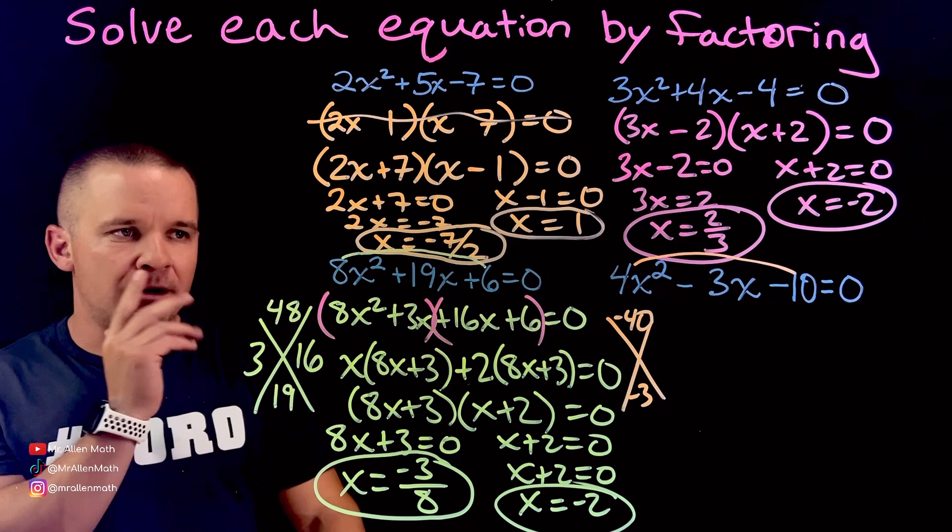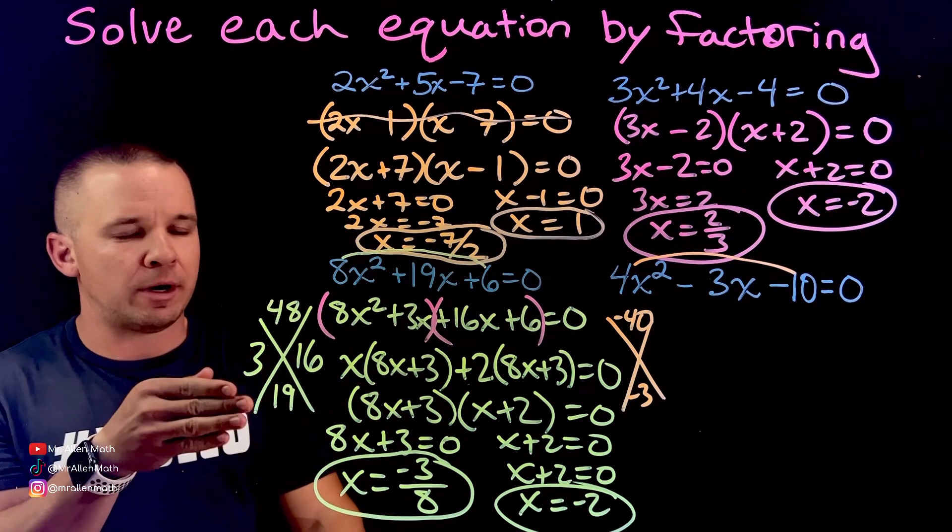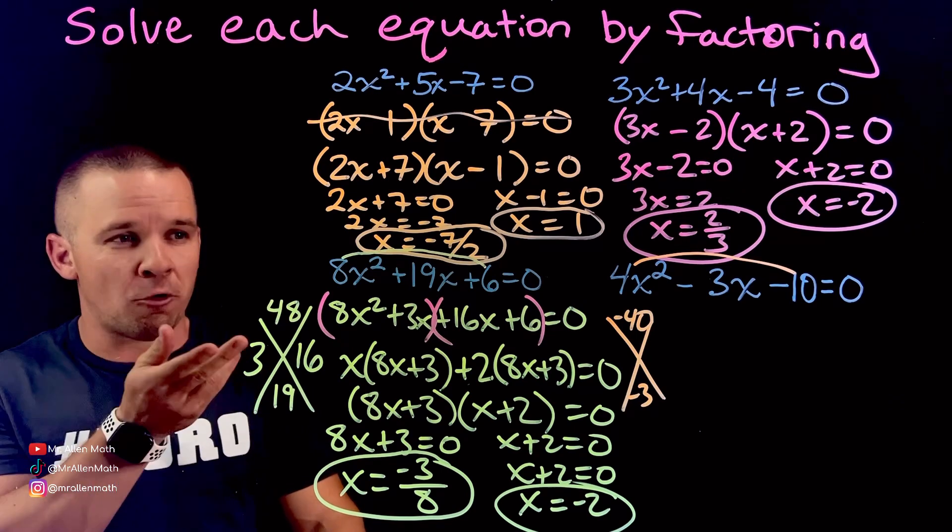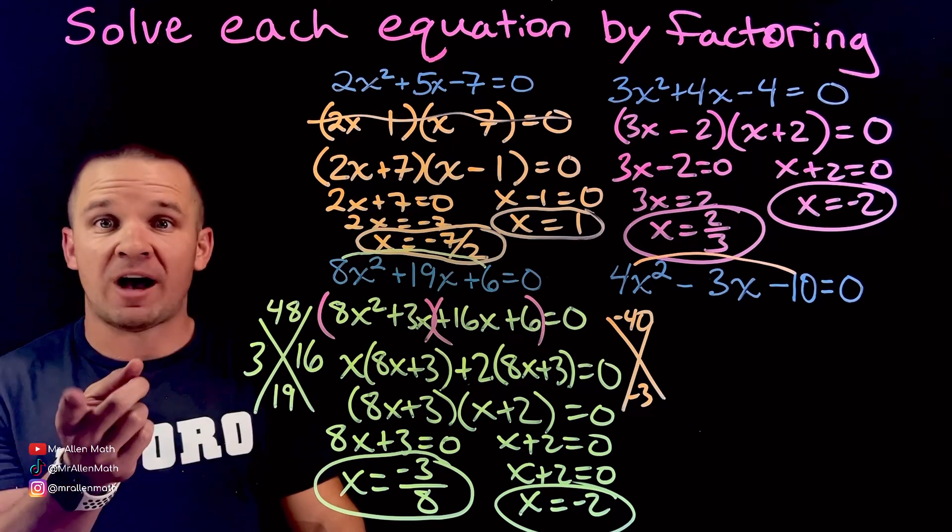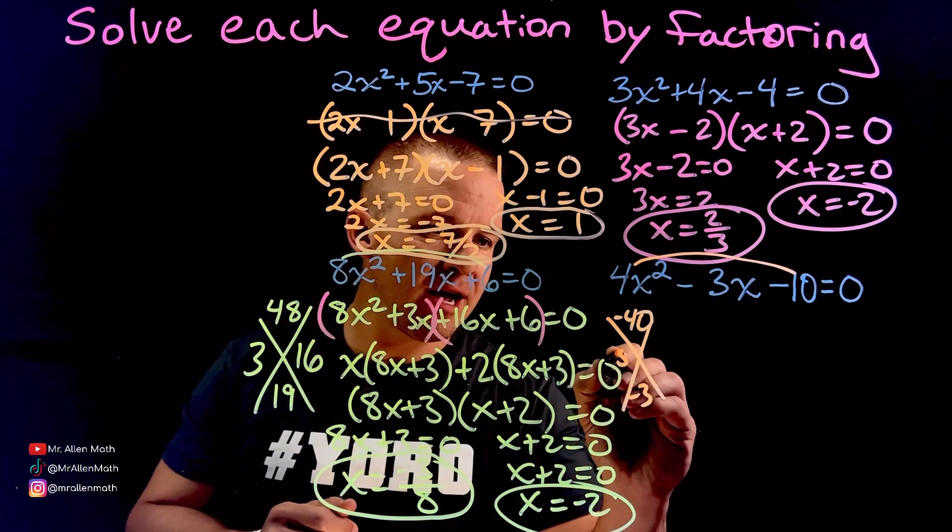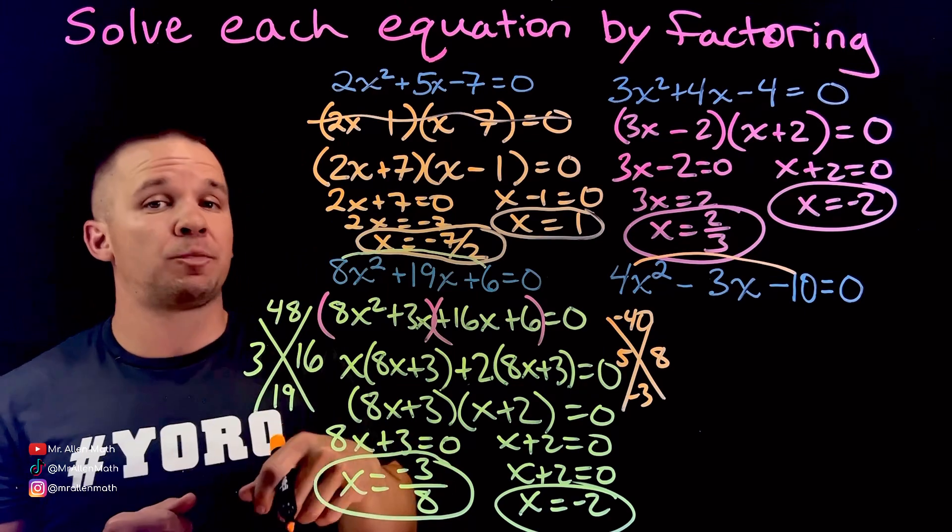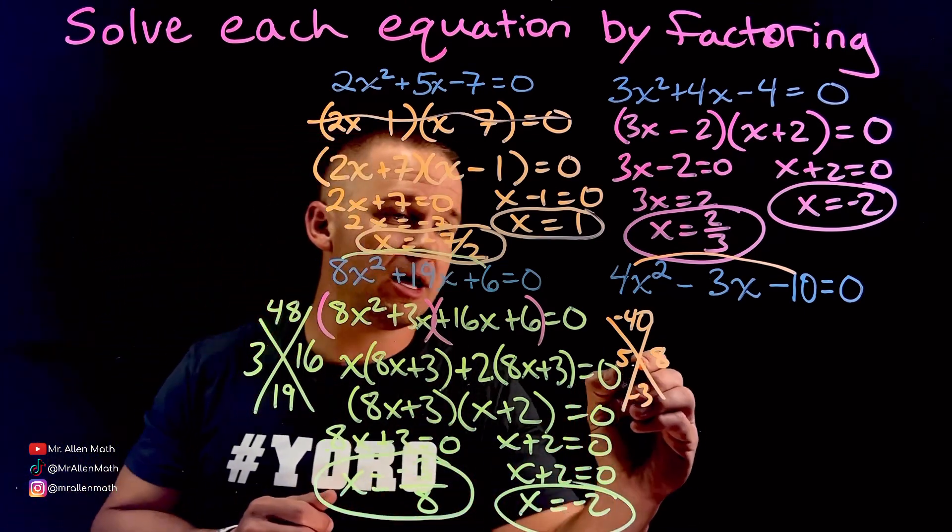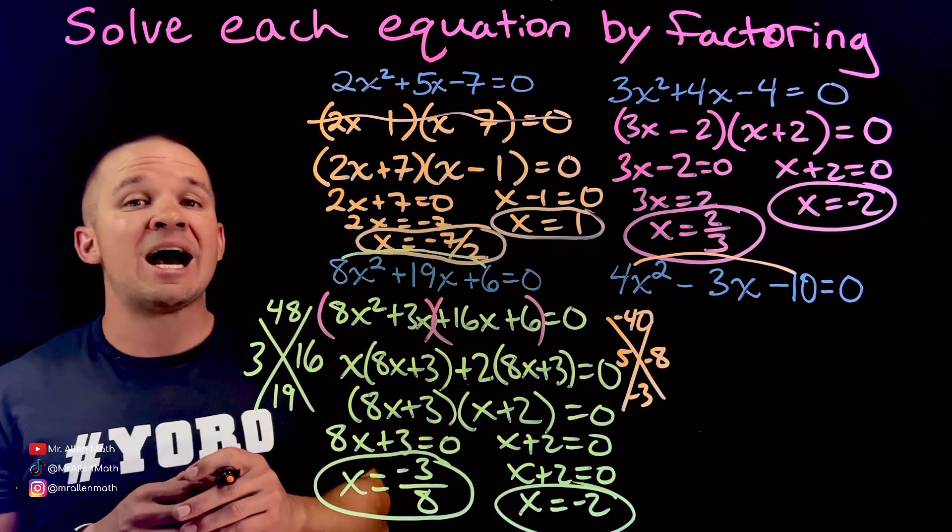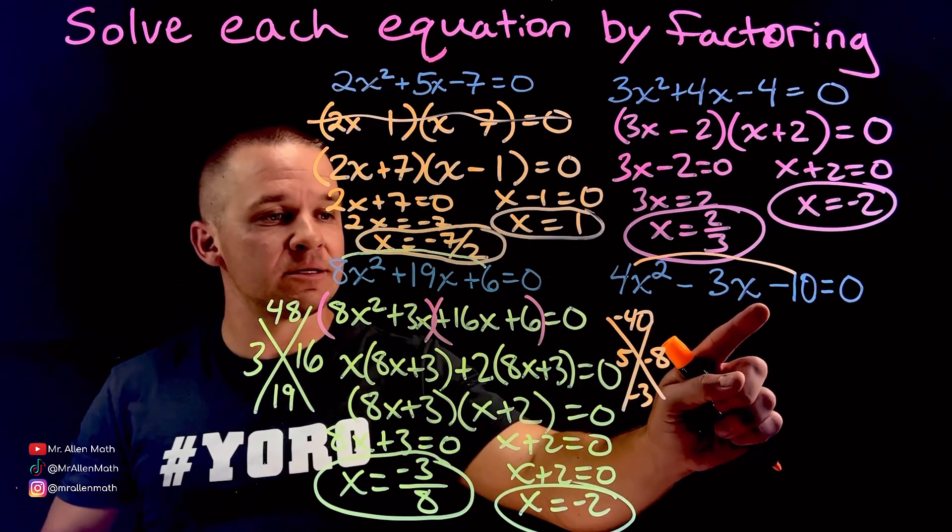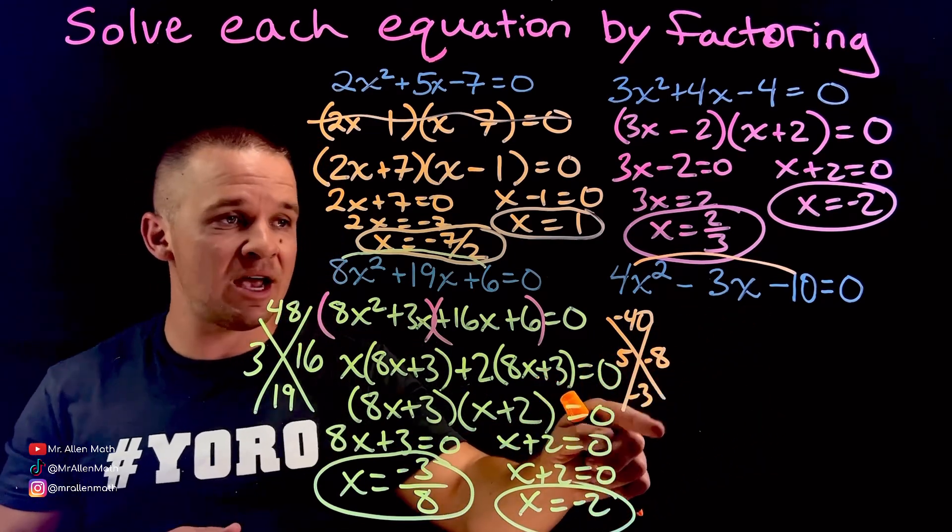Well, we got 1 and 40. No. 2 and 20. No. 4 and 10. No. 5 and 8. There we go. So 5, 8. Which one needs to be negative there? Because it's got to multiply to a negative 40. Add a negative 3. 8's going to be negative. Now I can break this negative 3x up into 5x and negative 8x.